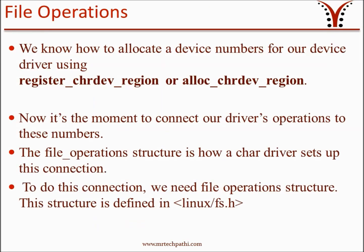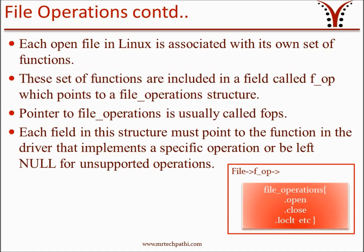From earlier sessions, we know how to allocate a device number for our device driver using register_chrdev_region or alloc_chrdev_region. Now we need to connect our device driver operations to these numbers. To establish this connection, we need the file operation structure. This structure is defined in the Linux header file fs.h. Each open file in Linux is associated with its own set of functions. These set of functions are included in a field called f_op, which points to file operation structures. In short, we call the pointer to file operations as fops. Each field in this file operation structure must point to a function in the driver that implements a specific operation, or be left null for unsupported operations. This small diagram here will give you a clear picture on how the file and file operations are associated. If you consider this as an open file in Linux, it contains a field f_op that points to file operation structures, which again carries the function pointers to the functions which the driver supports.